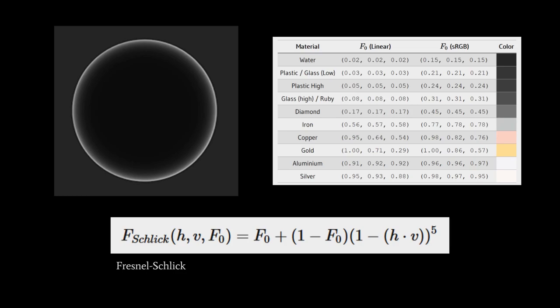This is actually a VEC3, RGB values between zero and one. And for dielectric materials, like say plastic, glass, and water, these values are going to be very low. For water, the RGBs are all 0.02.